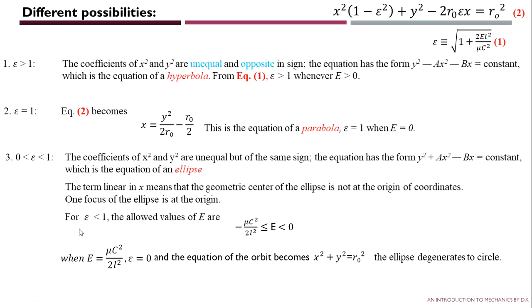In summary, ε will give the shape of the orbit. If the value of ε is between 0 and 1, the orbit is an ellipse. Thank you.